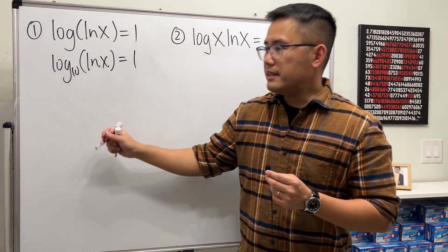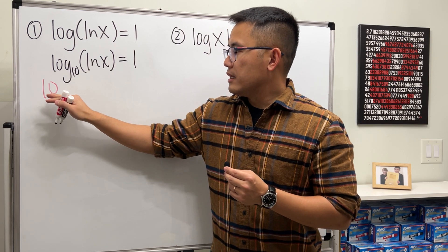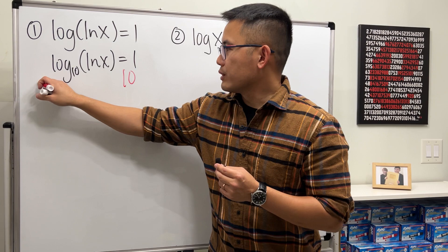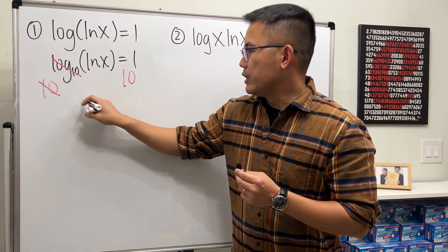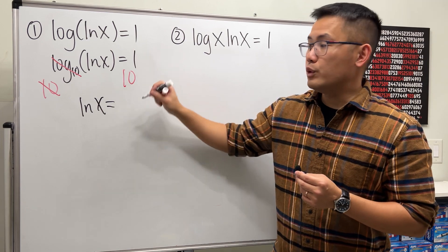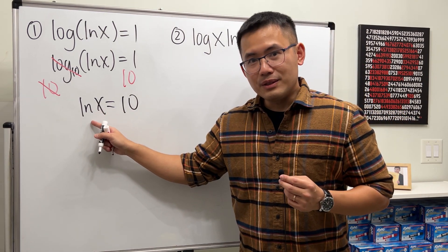Now knowing the base we can just go ahead and match the base and do 10 to this power and then 10 to that power so that this and that can cancel. And then we get ln of x is equal to 10 to the first power which is 10.